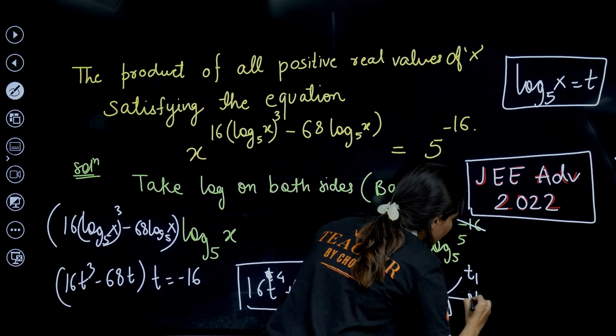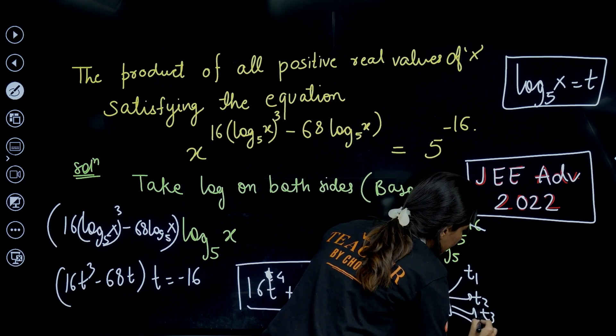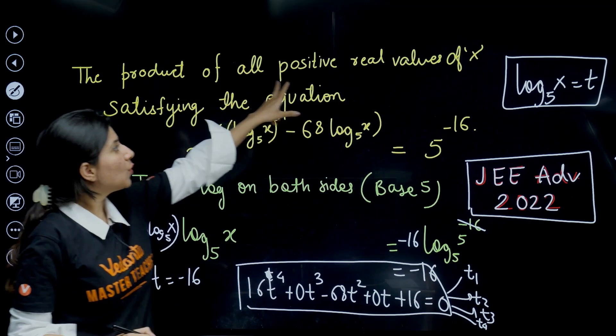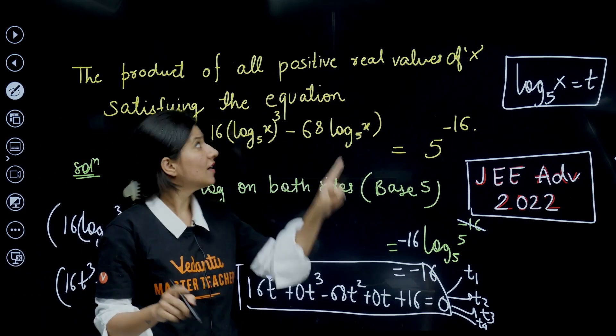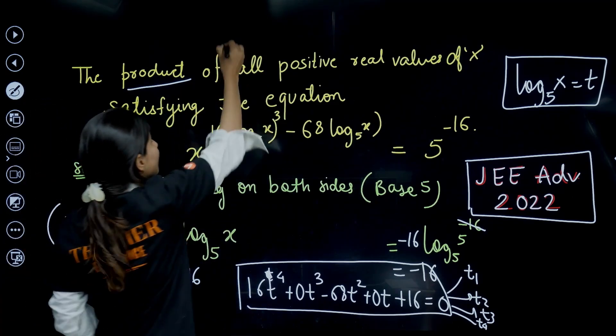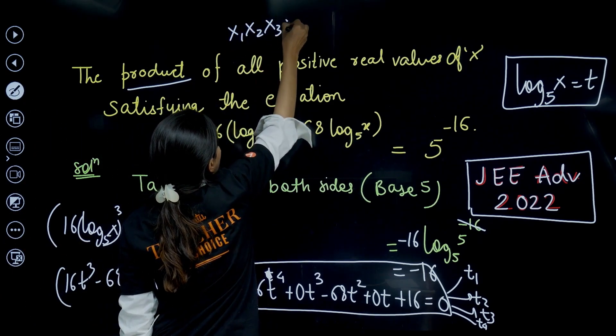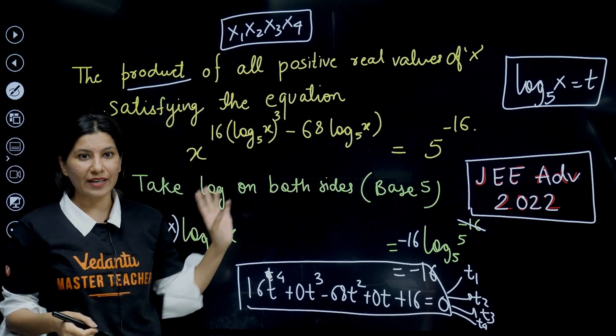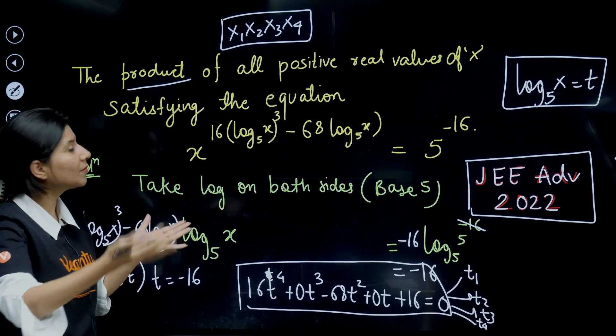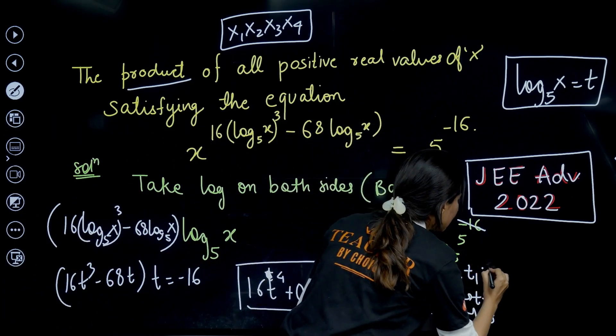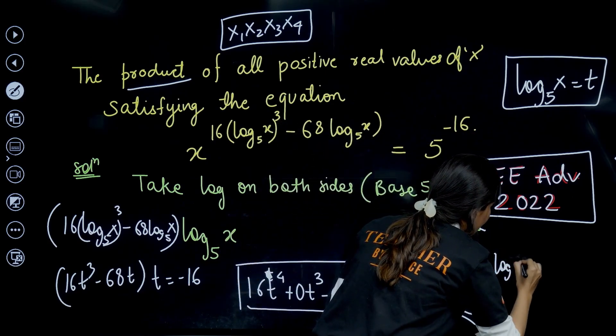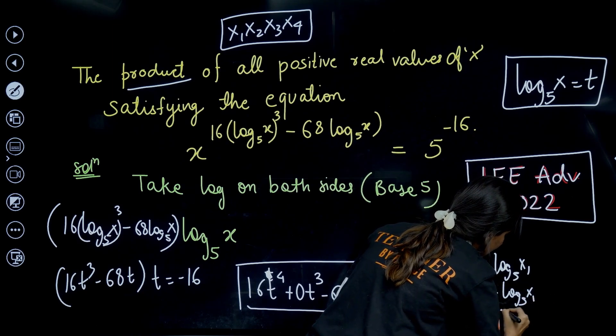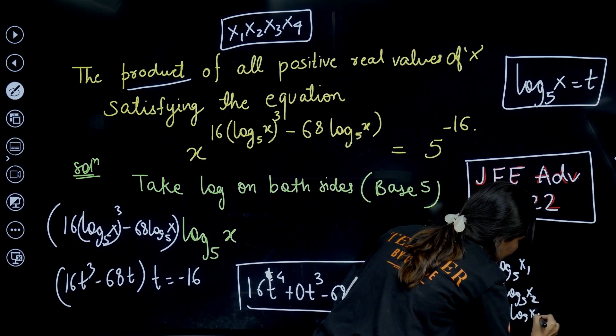This will have four values of t: t₁, t₂, t₃, and t₄, four roots. What we are looking for is positive real values of x, basically product of x₁ × x₂ × x₃ × x₄. Four values of t correspond to four values of x. Corresponding to t₁ I'll be having log of x₁ to base 5, this is log of x₂ to base 5, x₃ to base 5, and log of x₄ to base 5.